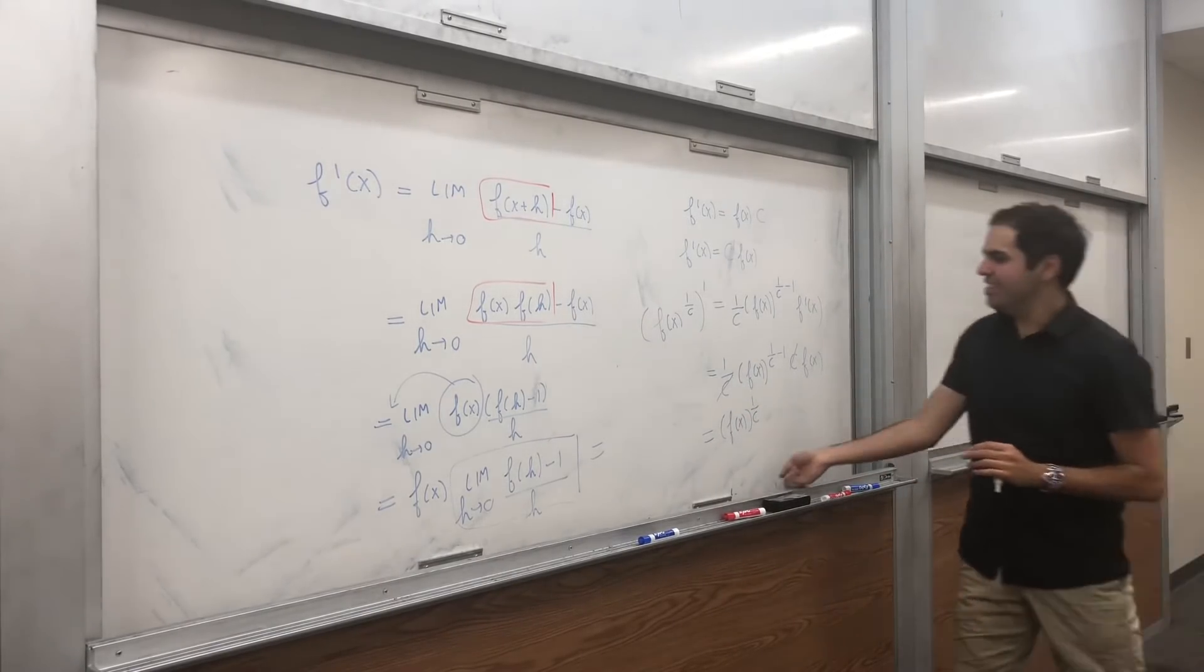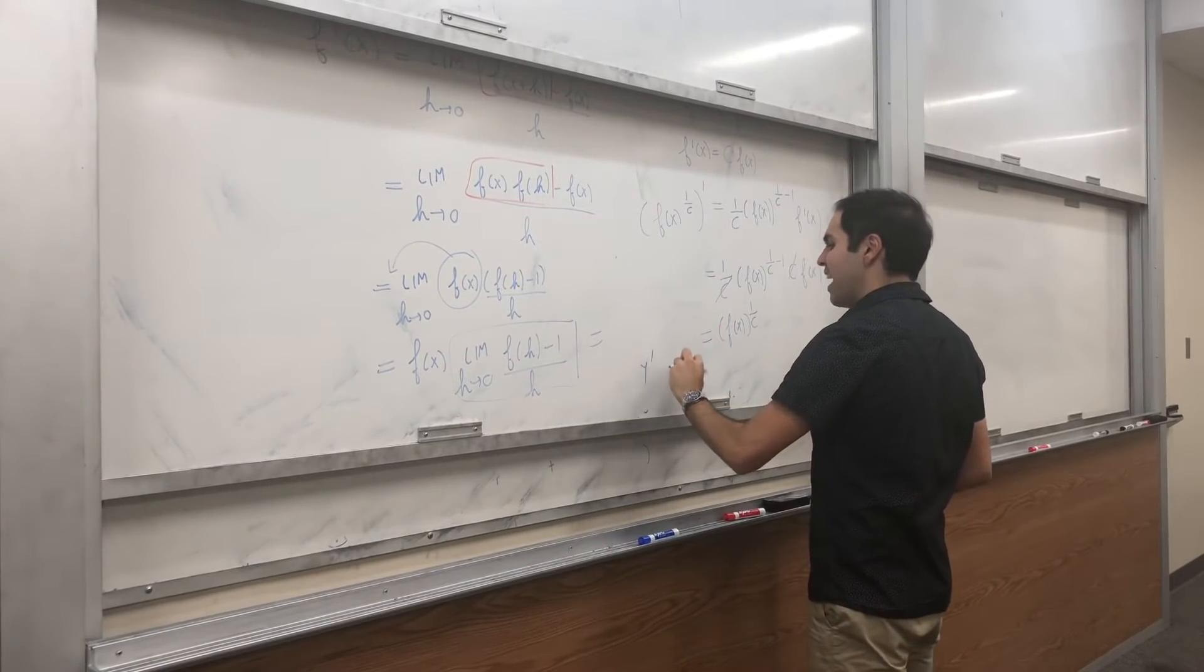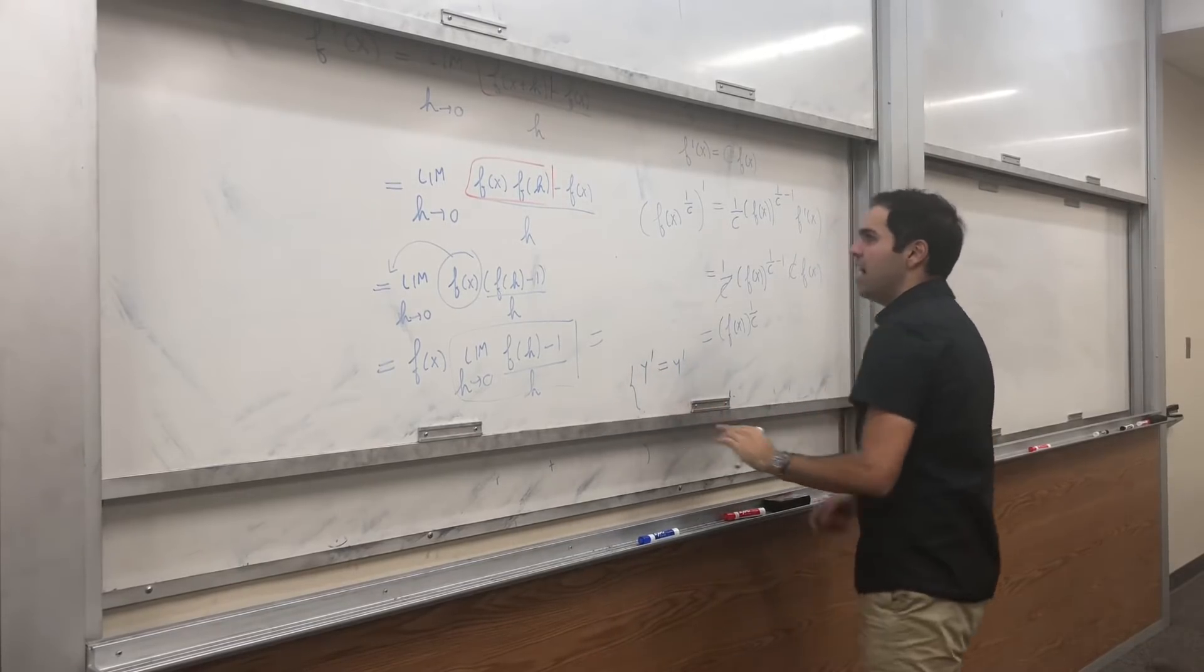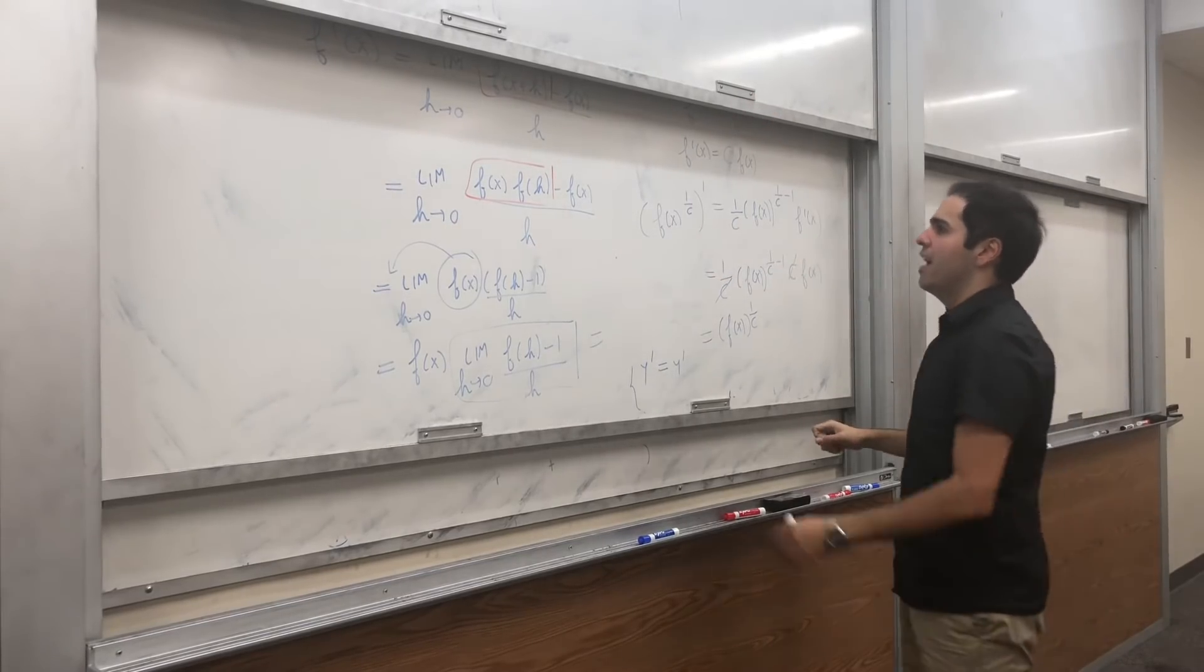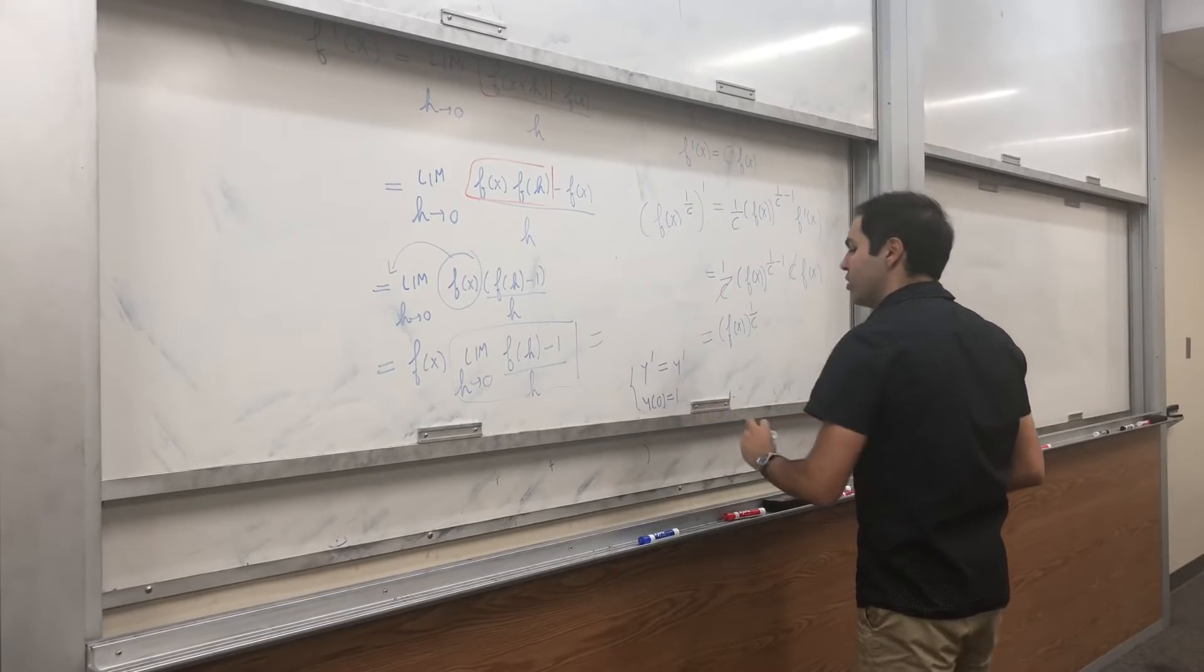So in particular, f of x to the 1 over c satisfies the equation y prime equals to y. And if you plug in f at 0, assuming again f of 0 is 1, then we get y of 0 equals to 1.